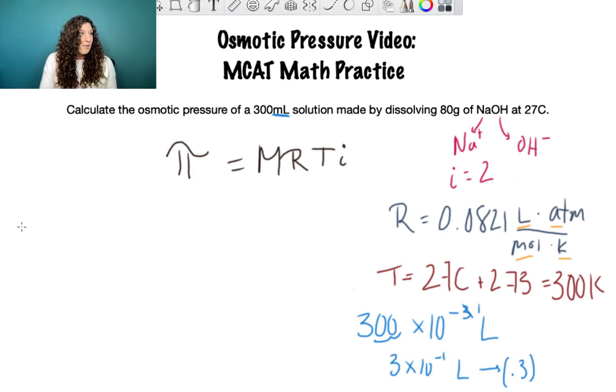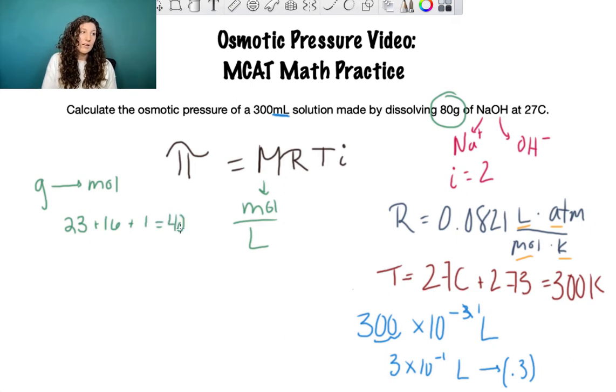Now we have all the correct units but something's missing. Molarity is moles per liter and we do not have moles. What do we have? Grams. So we need to get from grams to moles. Think way back to basic gen chem, to get from grams to moles we need molar mass. You'll have access to a periodic table on the MCAT. Go ahead and calculate the molar mass of NaOH. The molar mass of sodium is 23, oxygen is 16, and hydrogen is 1, which gives us 40 grams per mole.